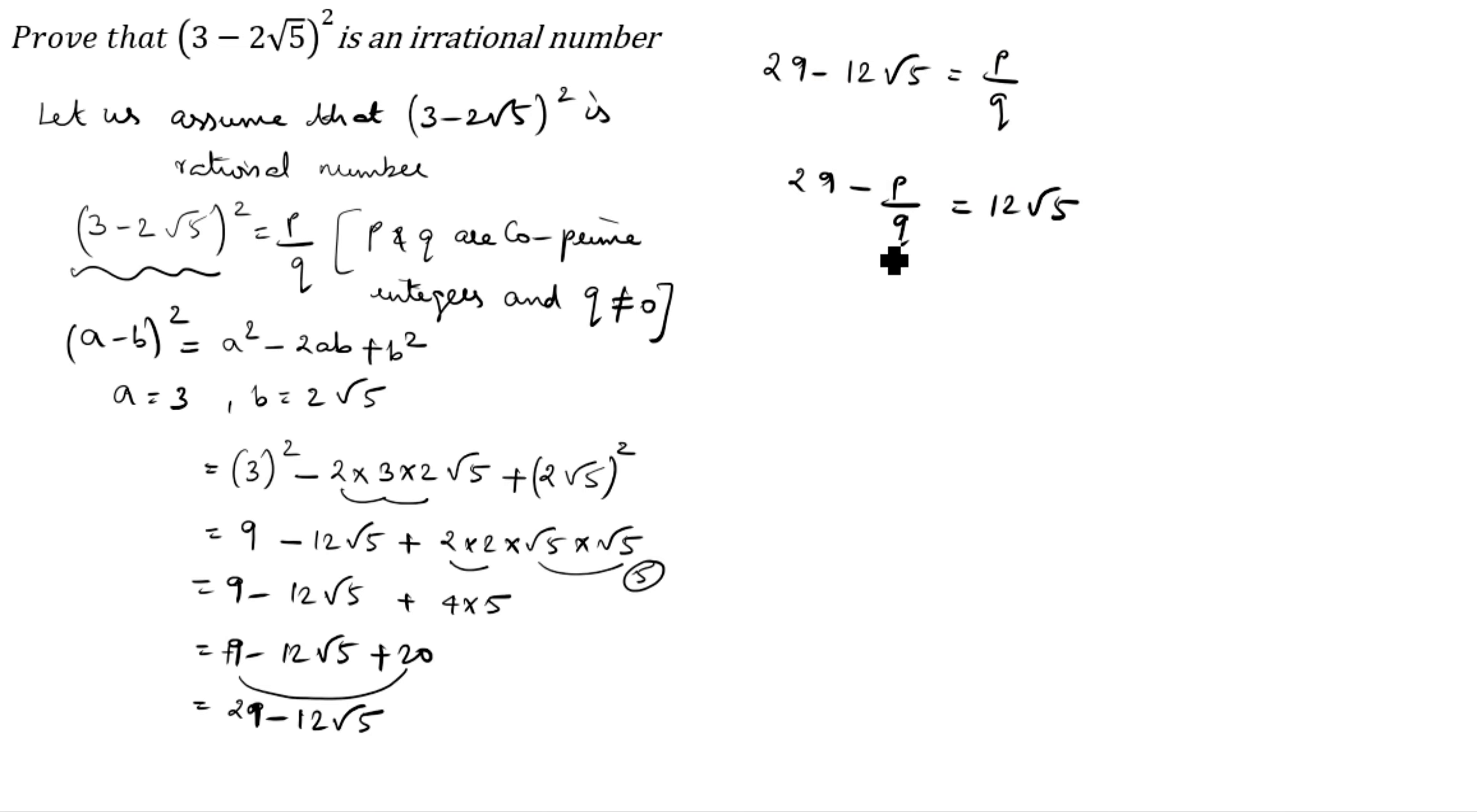Now you have to cross multiply. 29Q minus P by Q is equal to 12 root 5. We need only root 5, so it comes down. 29Q minus P by 12Q is a rational number.